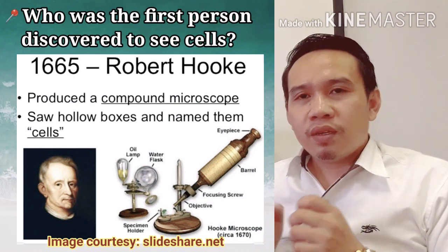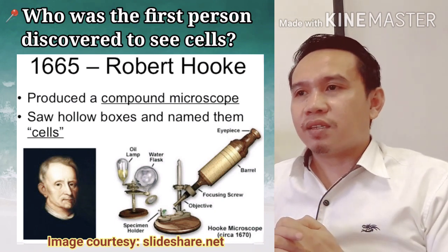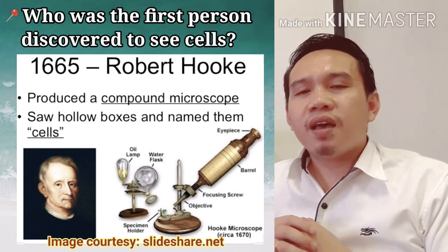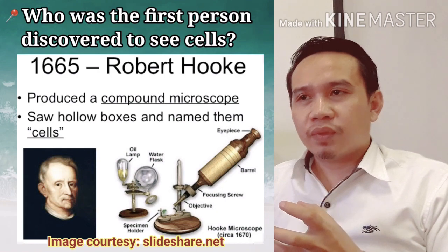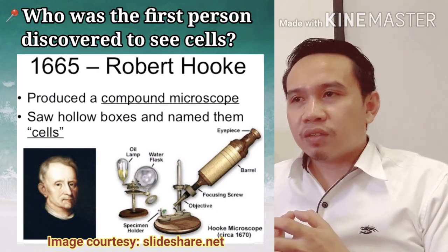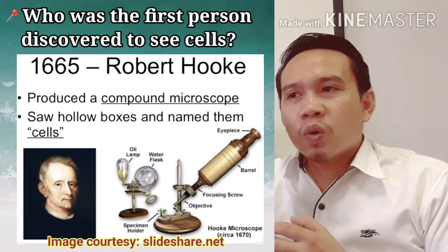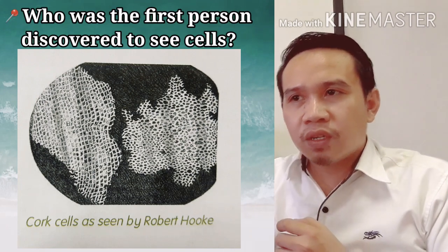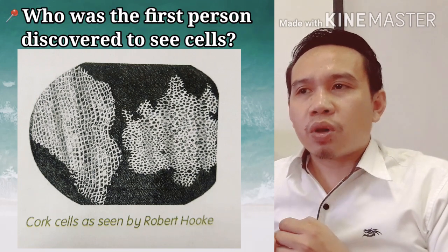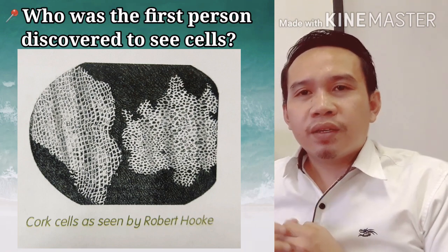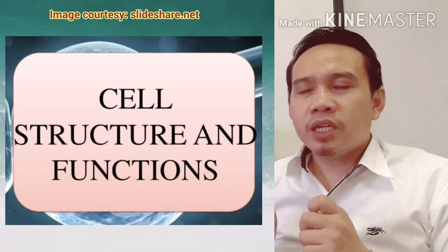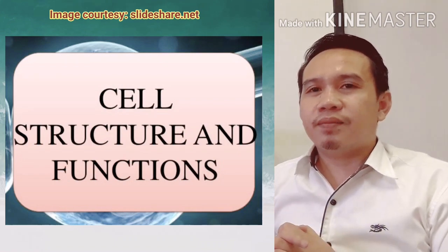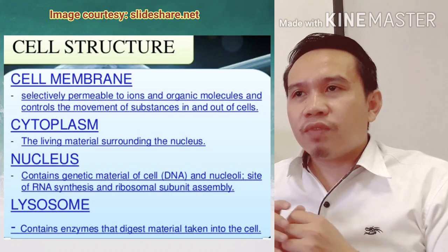His name was Robert Hooke. Robert Hooke was a British scientist — he was the first person to study about cells. He used cork cells observed through a microscope to figure this out.